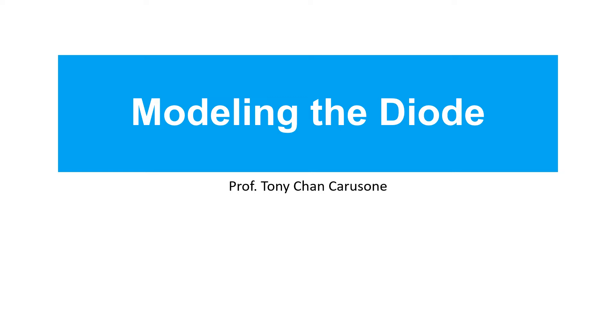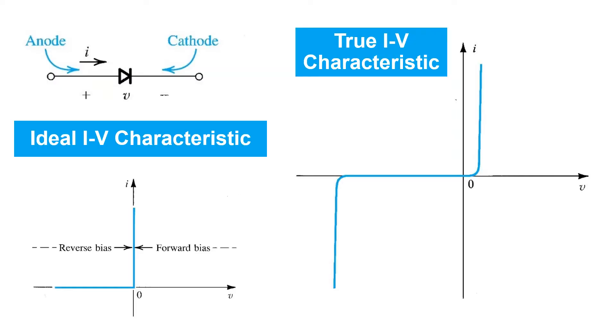In this video we'll learn about modeling the diode. We've already seen two models for the diode. We've talked about its ideal IV characteristics - this is what we can call an ideal diode model, where we see zero current flowing when the diode's reverse biased and zero forward voltage drop when it's forward biased.